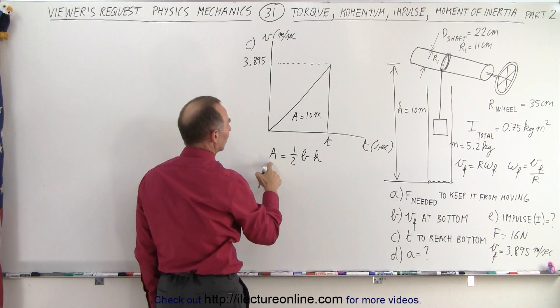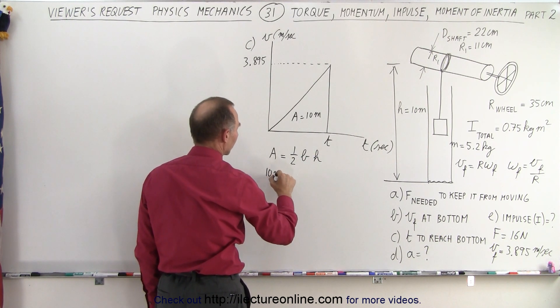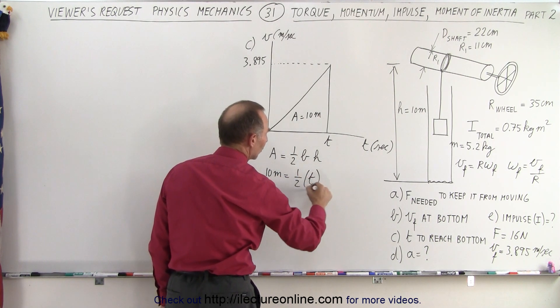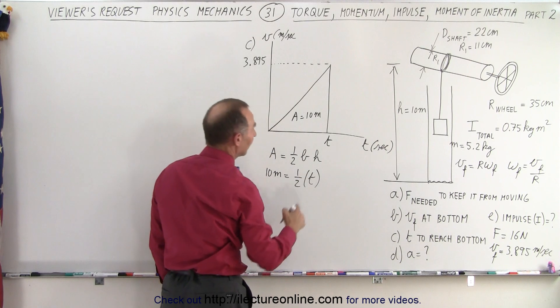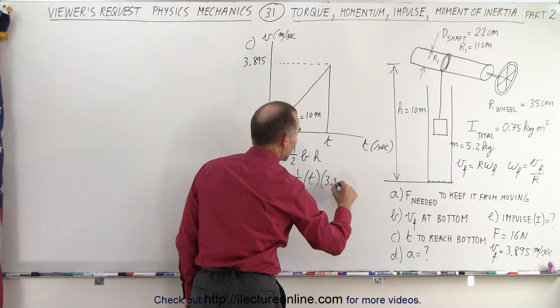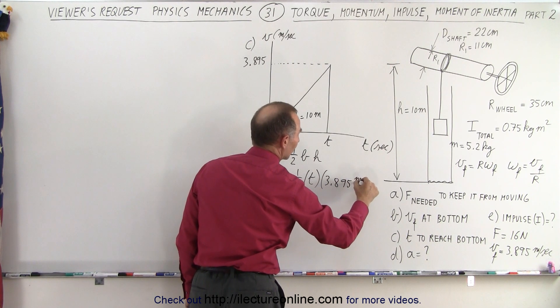And now we can go ahead and say that the area of the triangle is equal to one half the base times the height. So in this case, we can say that the area is equal to 10 meters is equal to one half times the base, which is the time that it takes, which is the unknown that we're looking for, times the height, which is 3.895 meters per second.